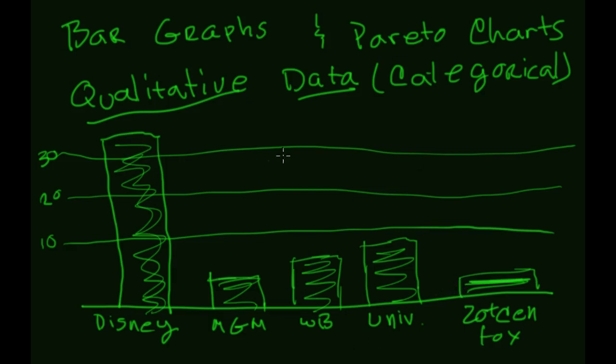One of the things, though, to note is because it's qualitative data, these don't have to be in any particular order. So if you switch the bars around, and let's say put Disney in the middle and Universal at the end, this doesn't change the meaning of the graph.